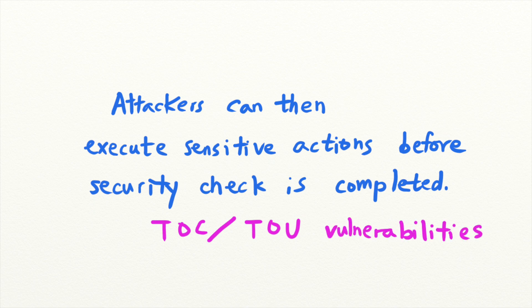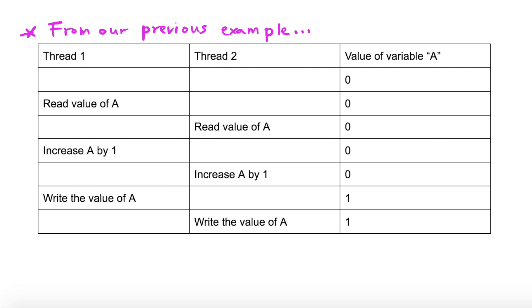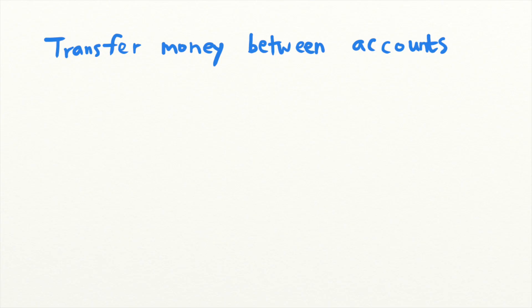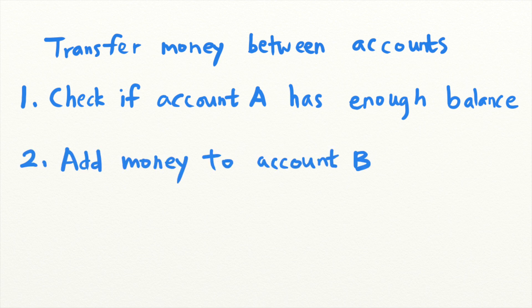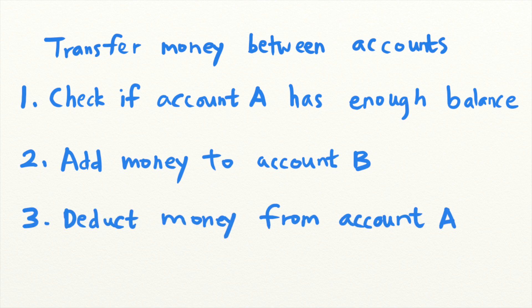Imagine if the two threads of the above example are executing something a little more sensitive: the transferring of money between bank accounts. The application would have to perform three subtasks to transfer the money correctly. It will have to first check if account A has enough balance, and then add the money to account B, and then finally deduct the money from account A.